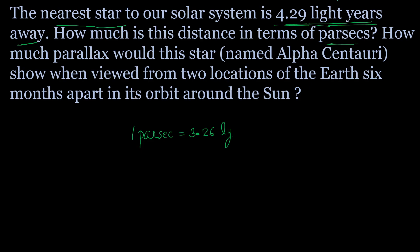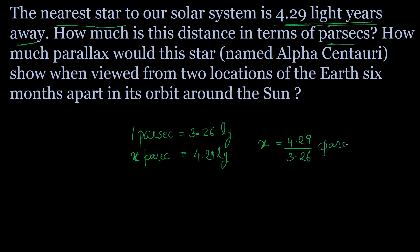We use the conversion: 1 parsec equals 3.26 light years. They have given 4.29 light years, so 4.29 light years equals x parsec. On cross multiplying, x equals 4.29 divided by 3.26 parsec. That was the answer to the first part of the question.